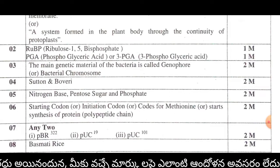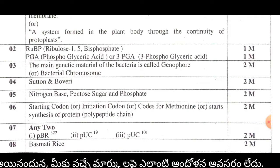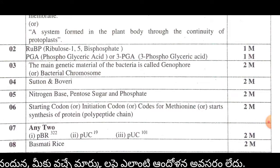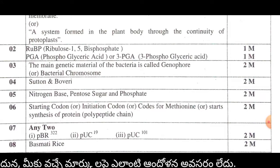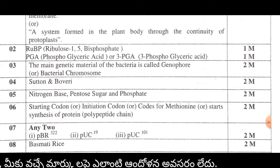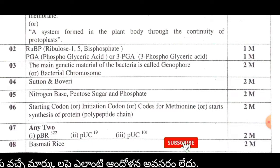The sixth question is about AUG. AUG is the initiation codon, or start codon. It is also the code for methionine. This answer gives 2 marks.